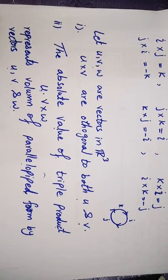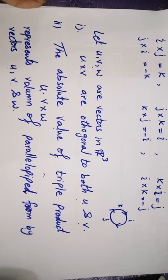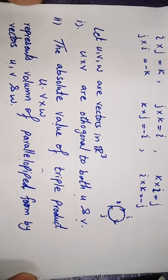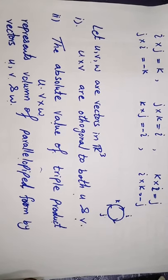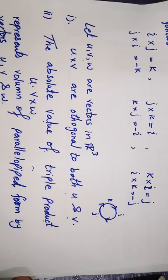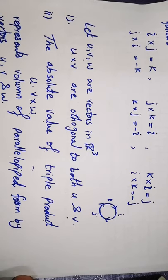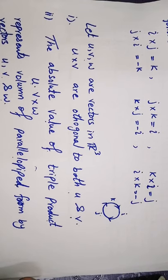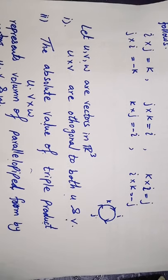So if u and v are vectors in R3, the cross product is orthogonal to both u and v, and the absolute value of the triple product gives the volume of the parallelepiped. Hopefully this lecture is clear. If you still have doubts you can ask me. If you found the lecture helpful, please like the video and kindly subscribe to my channel. Thank you so much.